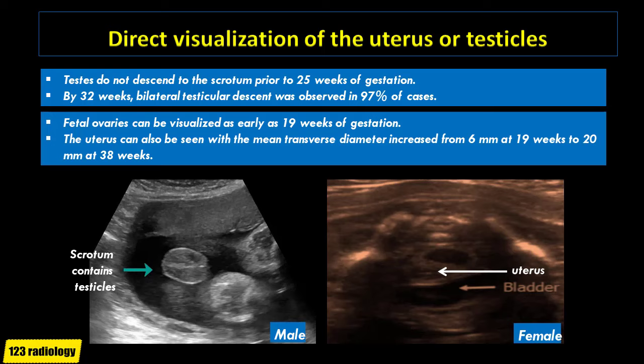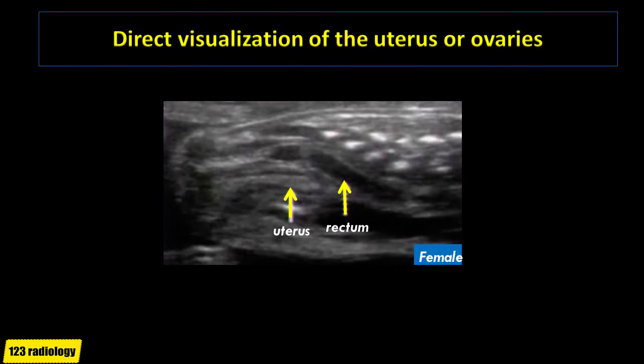The uterus can also be seen, with the mean transverse diameter increasing from 6 mm at 19 weeks to 20 mm at 38 weeks. On the image on the right side of the screen, two testicles fully descended are seen in this term male fetus. On the other image, the urinary bladder and uterus are seen anterior to the rectum, with the endometrium well visualized in a female fetus. On the sagittal view, the uterus is seen seated anterior to the rectum and posterior to the urinary bladder in a female fetus.